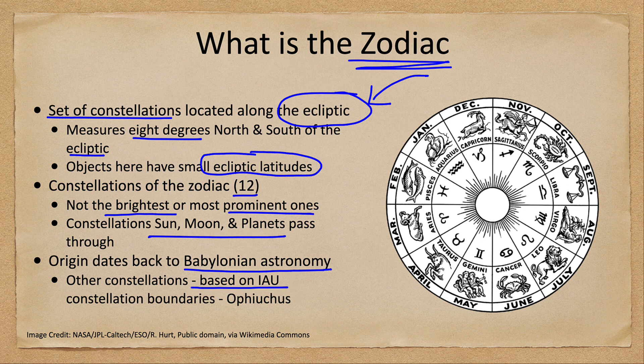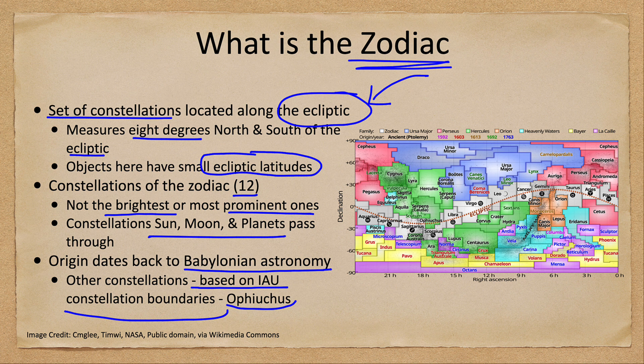More recently, the International Astronomical Union boundaries for the constellations add an additional constellation in the region of the zodiac, which is Ophiuchus. We can see that on the chart coming up here. The constellations shown in gray with a dotted line going through them are the constellations of the zodiac — you'll recognize many of those names.